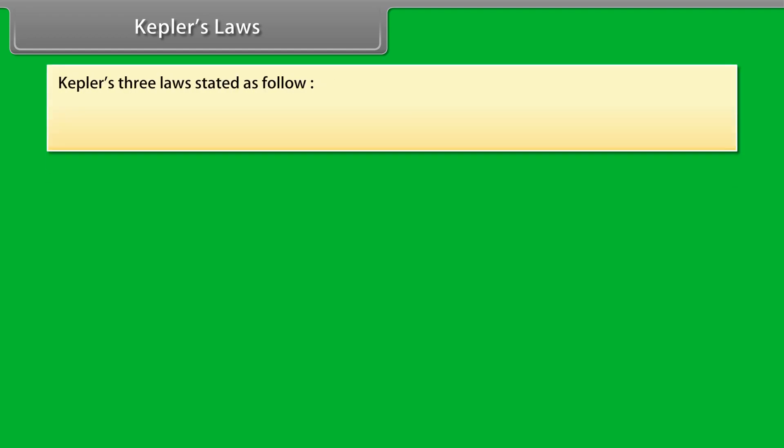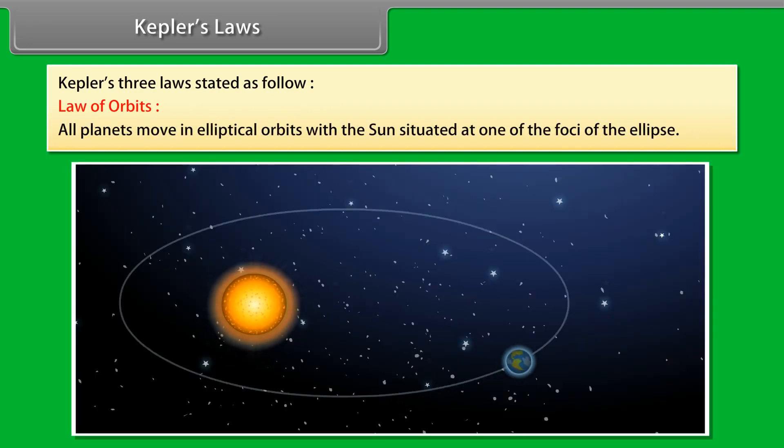Kepler's Laws. Kepler gives three laws. Law of Orbits: All planets move in elliptical orbits with the sun situated at one of the foci of the ellipse.